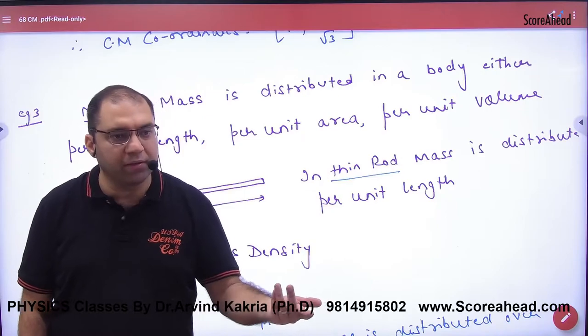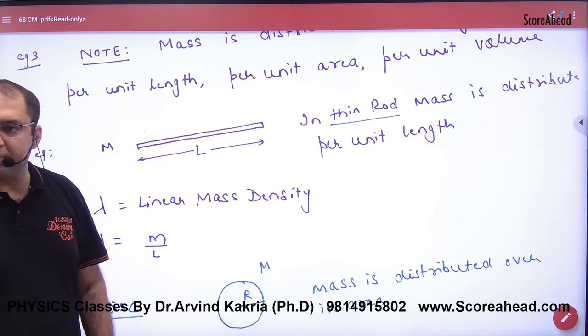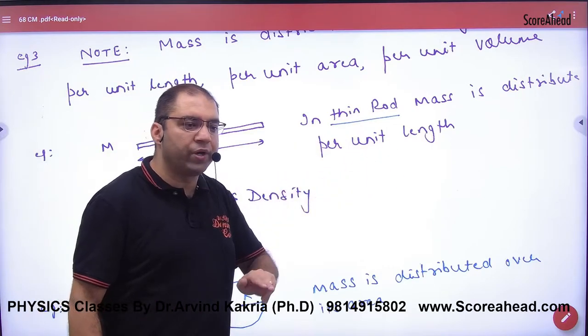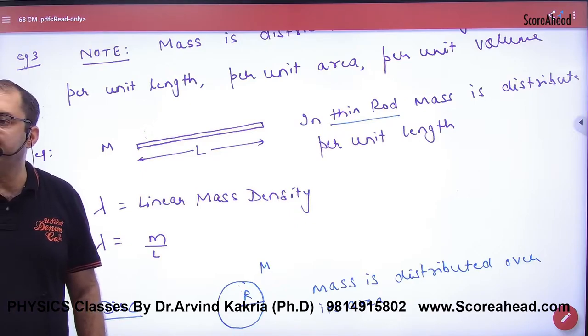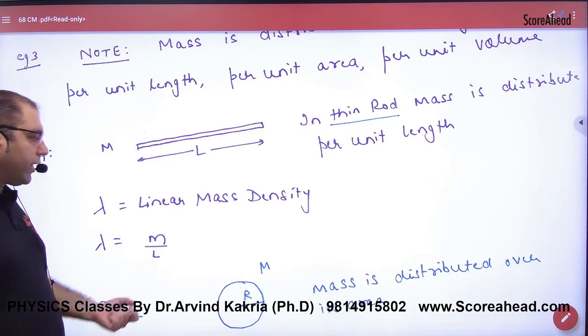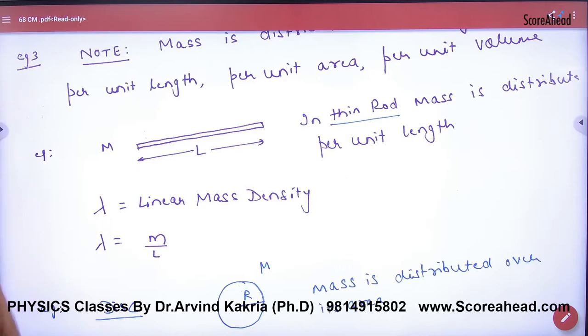Areawise, volumewise. So we have thin rod. We always take mass distributed per unit length. And when mass is lengthwise distributed, the density is Lambda. Lambda is linear mass density. Lambda is equal to mass per unit length.